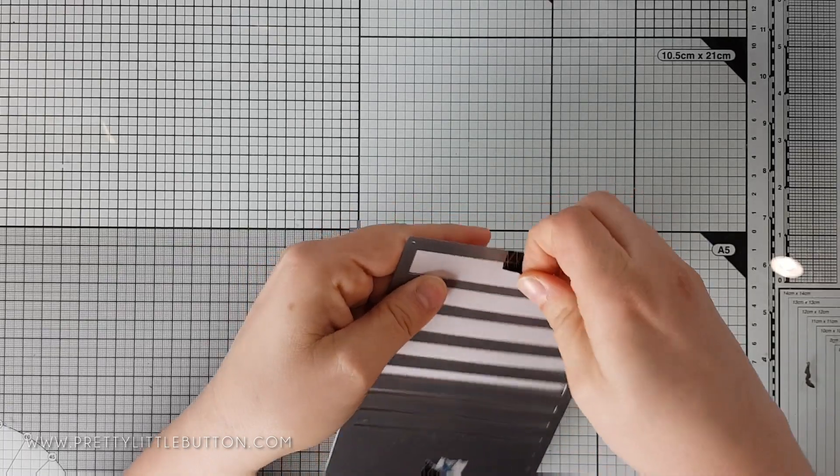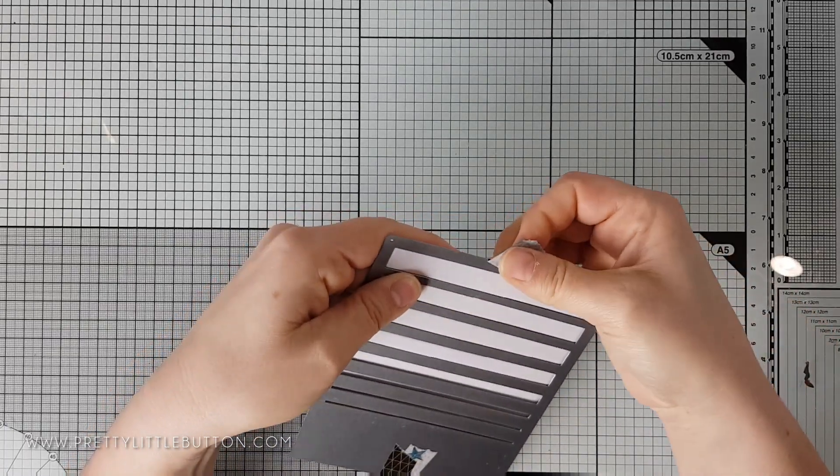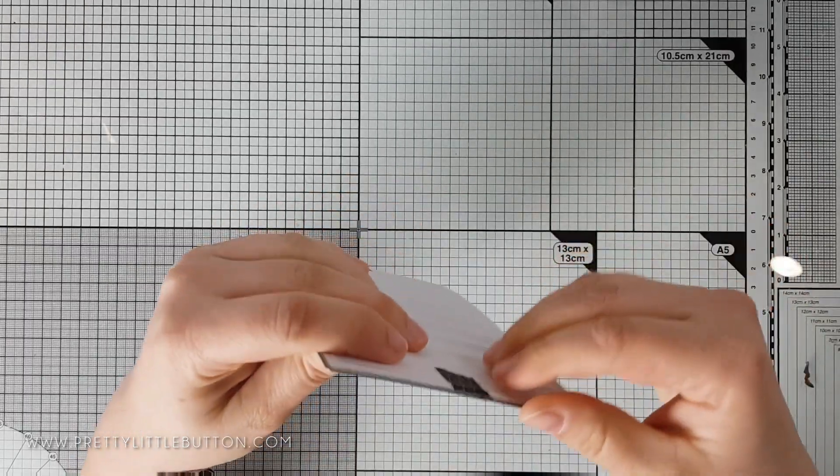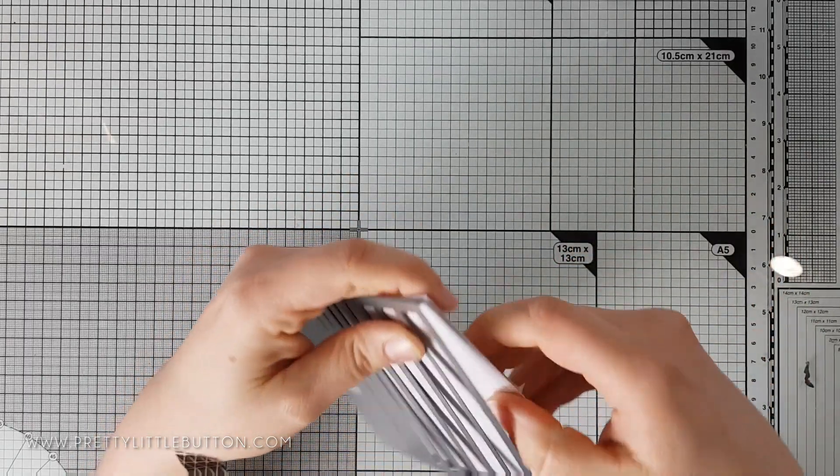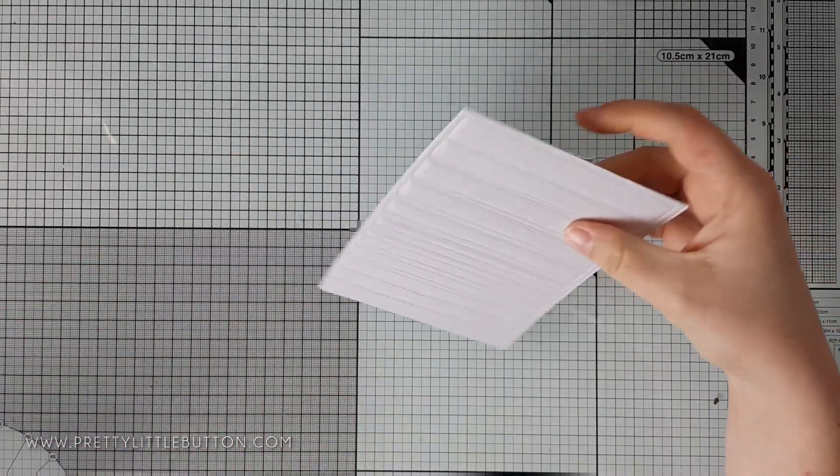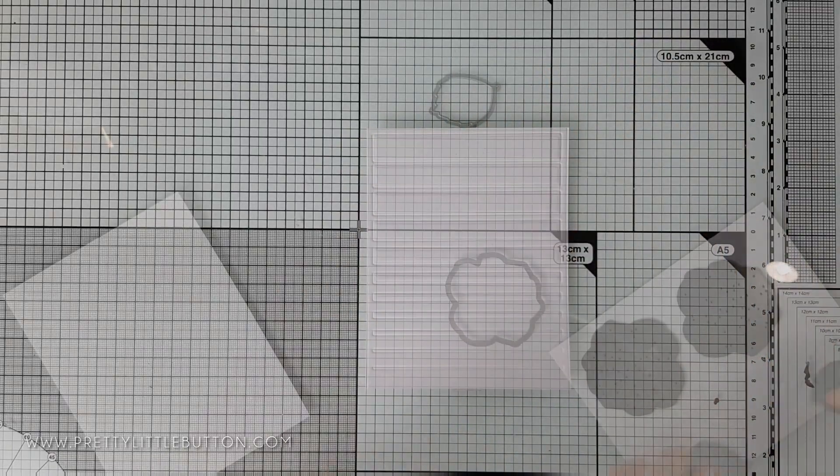The embossing mat allows the die to press into the cardstock but does not give enough pressure to cut it and instead just leaves the embossed indentation. This gives a really lovely tone-on-tone texture for the background.